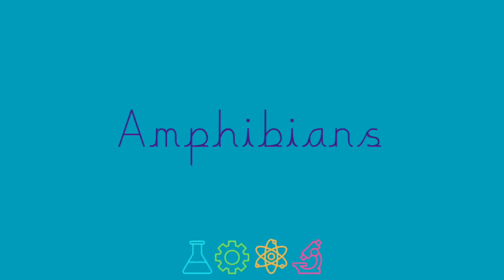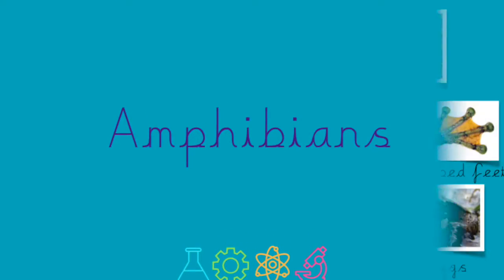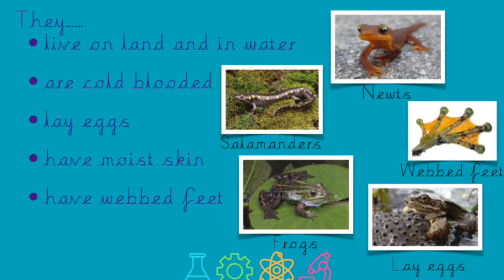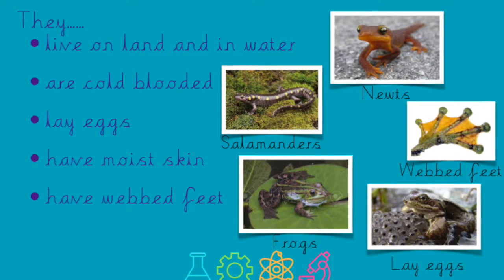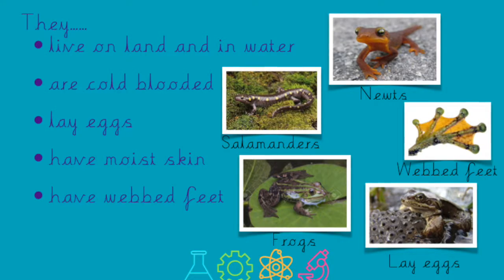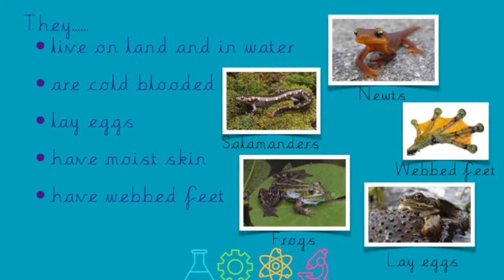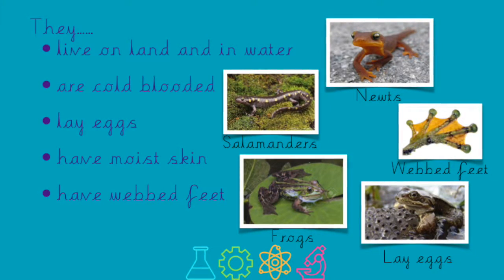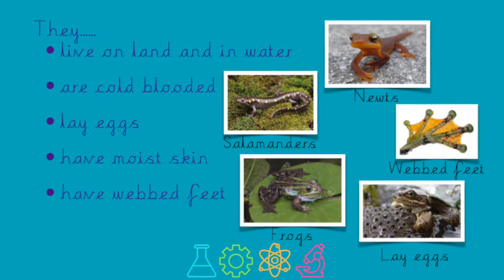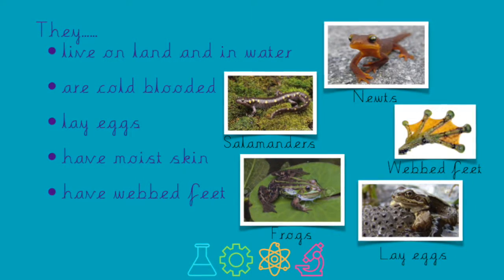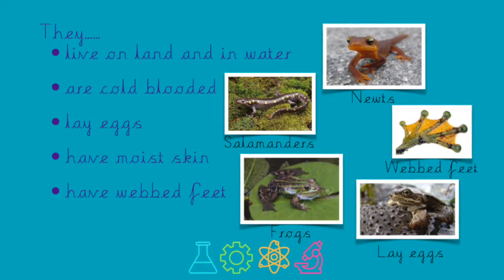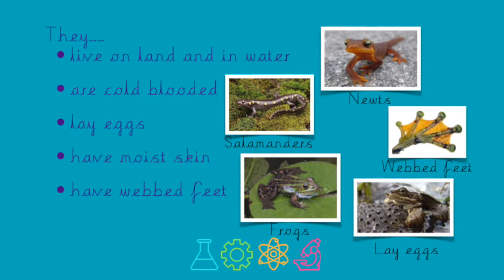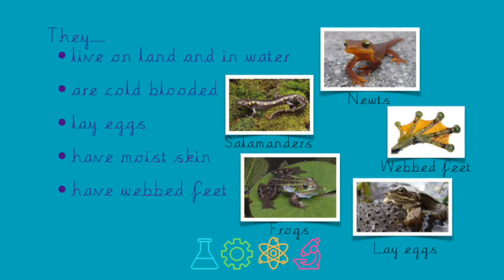Amphibians live on land and in water. They are cold-blooded, they lay eggs, have moist skin and also they have webbed feet. Some examples of amphibians are frogs, newts, salamanders and toads.